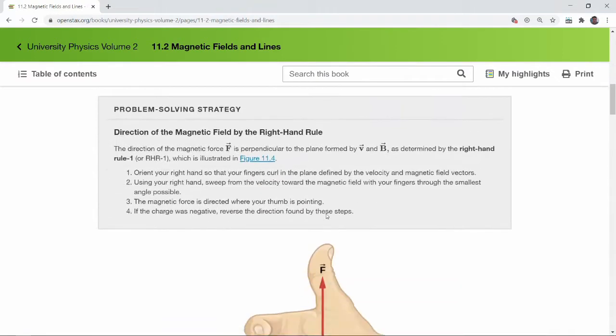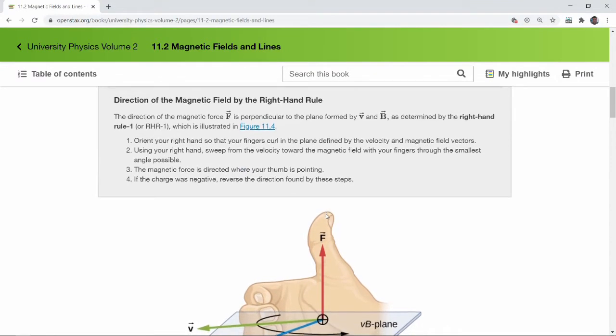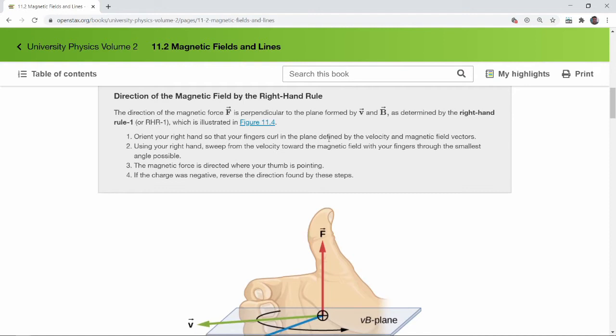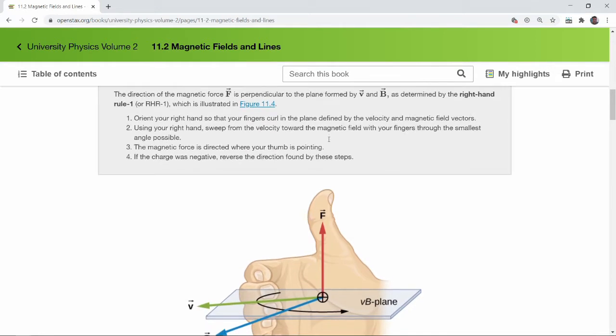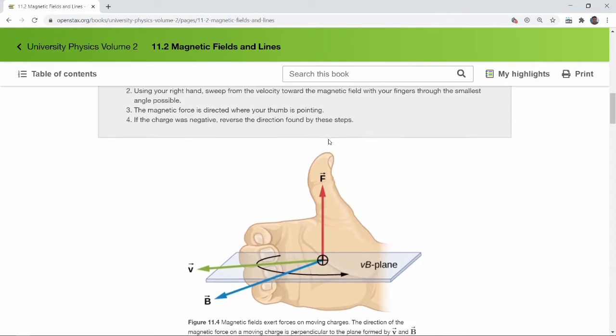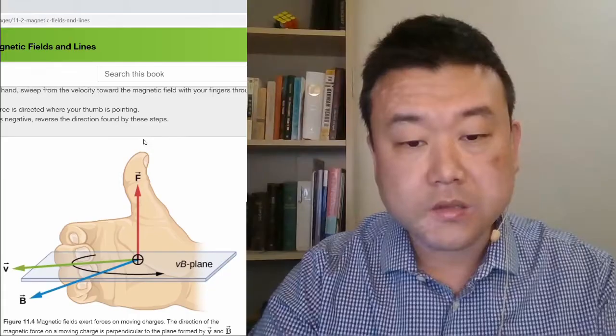So as you read through it, one thing that I would ask you to slow down and spend enough time on is in the coverage of the right hand rule. This is something that you might have seen in your physics 4A when we discussed rotation and angular momentum. You might have seen right hand rule there along with cross product. And I have a separate lecture video where we'll spend time going over right hand rule and the practice of right hand rule. For now, I would ask you to pause a little bit,